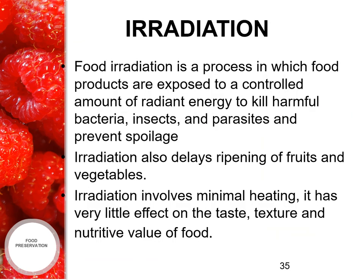Another important method in food preservation is irradiation. It is a process in which food products are exposed to a controlled amount of radiant energy to kill harmful bacteria, insects and parasites and prevent spoilage. Irradiation also delays ripening of fruits and vegetables. It involves minimal heating and has very little effect on the taste, texture and nutritive value of the food.